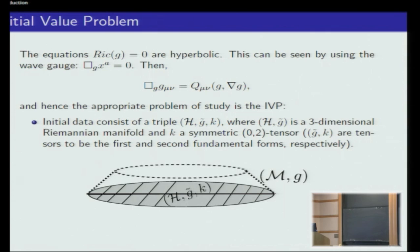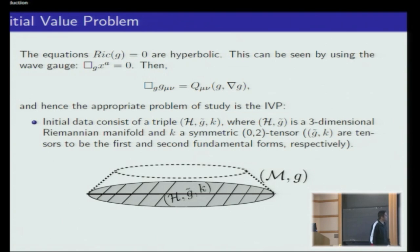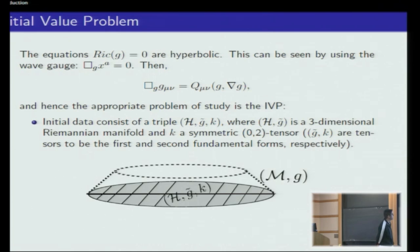We know that the appropriate system to study for this kind of equation is the initial value problem. You assume you know the space at some initial time, and you want to understand the evolution of the space. The evolution is exactly given to you by this system of equations, which is precisely what gravity tells us about what happens.